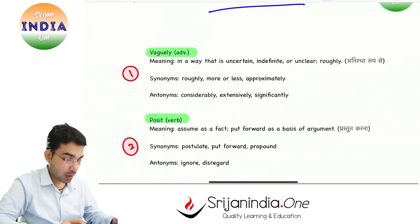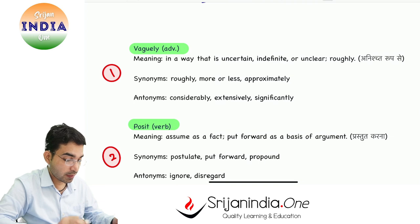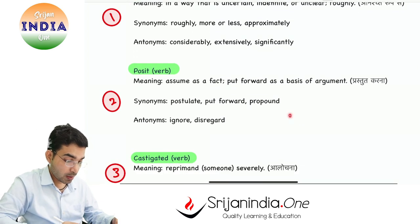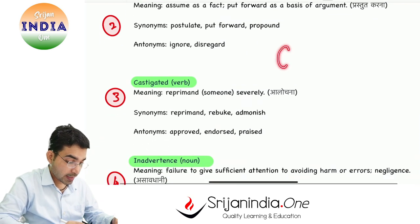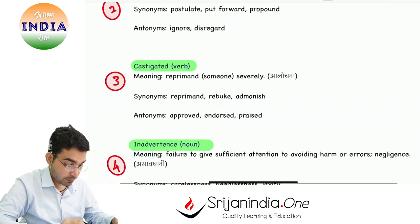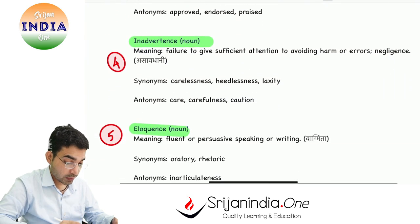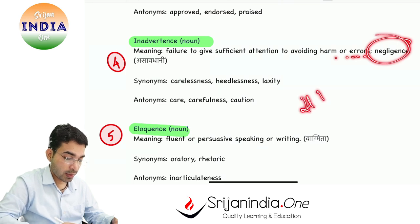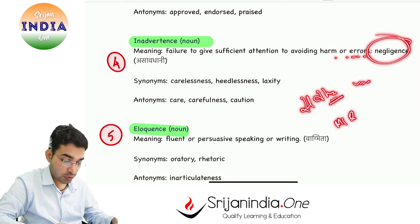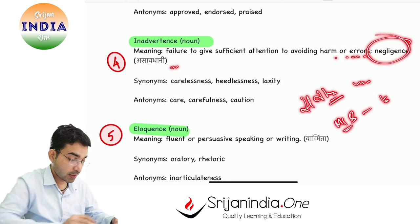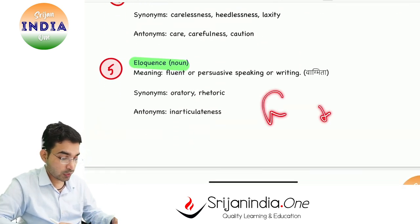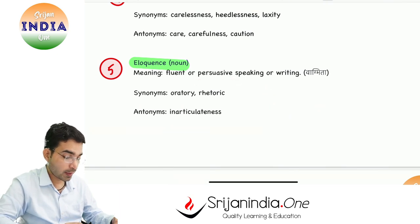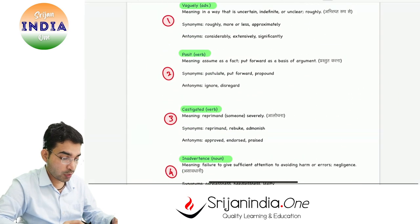Today's vocabulary: 'vague' means uncertain, rough, more or less approximate. 'Posit' means to present, assume as a fact, or put forward as a basis of argument. 'Castigated' means severely criticized or reprimanded. 'Inadvertence' means asavdhani — failure to give sufficient attention, negligence. Reading questions carelessly leads to wrong answers. 'Eloquence' means vagmita — fluent or persuasive speaking or writing, oratory skills.